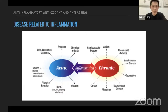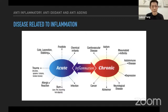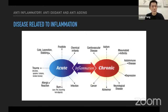Acute means short-lived — it will attack us on a short-term basis. For example, frostbite, chemical irritants, burns, allergic reactions, and infections. These will not prolong for too long — it's an acute attack on our body or immune system.